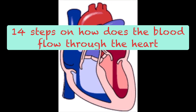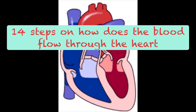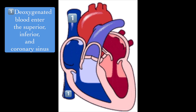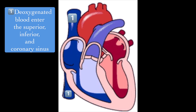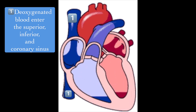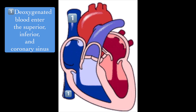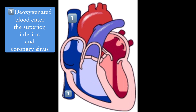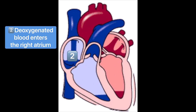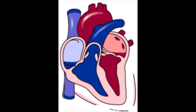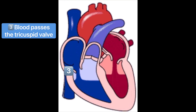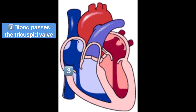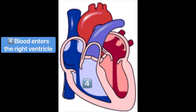Here are the 14 steps on how blood flows through the heart. Oxygen-poor blood from the body travels through the inferior or superior vena cava, or coronary sinus — the coronary sinus receives blood from the coronary circulation. Then the deoxygenated blood enters the right atrium, and after atrial contraction, blood passes through the tricuspid valve and enters the right ventricle.